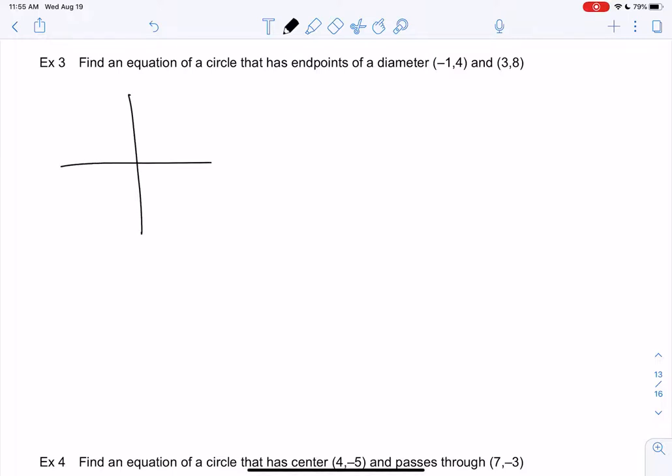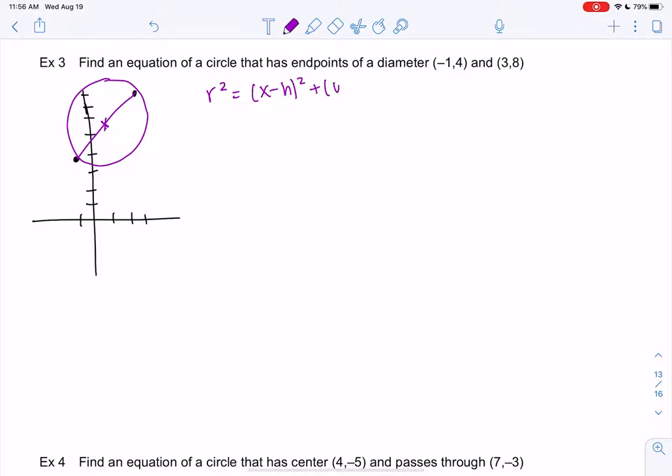So let me plot those points and then remind you what diameter is. So negative 1 and 4, and then 3 and 8. I need more room for 8. Okay, 3 and 8, negative 1 and 4. If these are on the edge of the circle, a diameter goes all the way across and the center is in the middle. To find the equation, we need r and we need the center, which is h and k. So we know neither of those. We need the radius and we need the center.